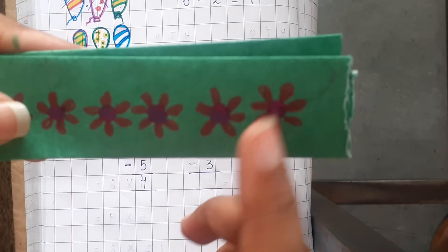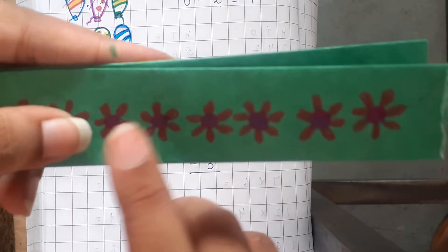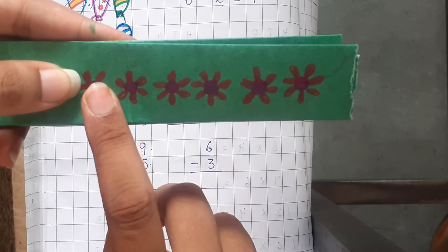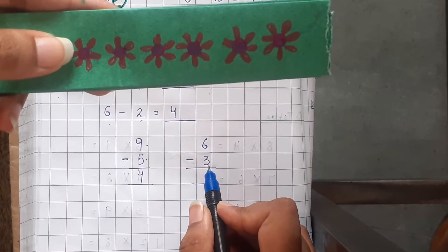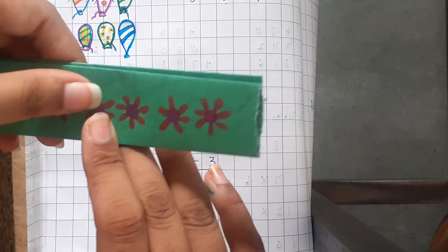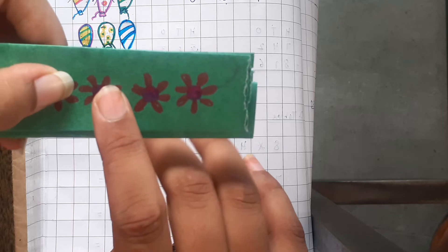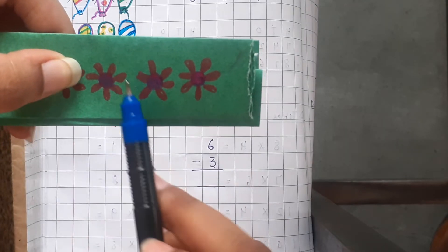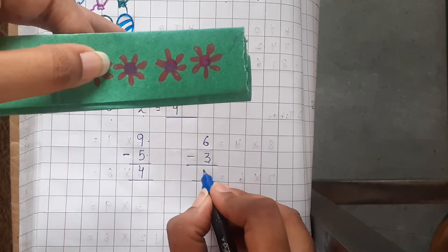So, 1, 2, 3, 4, 5, 6. These are 6 flowers and we have to take away 3: 1, 2, 3. So 3 we took away. How many are left? 1, 2, 3. 3 are left.